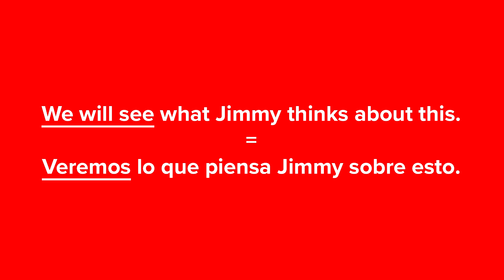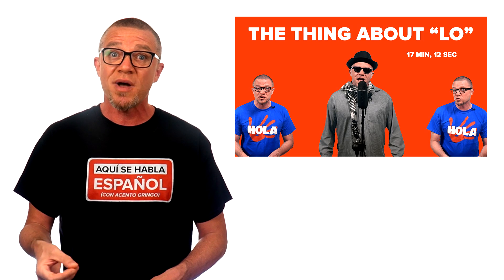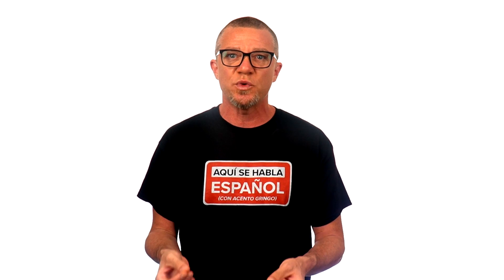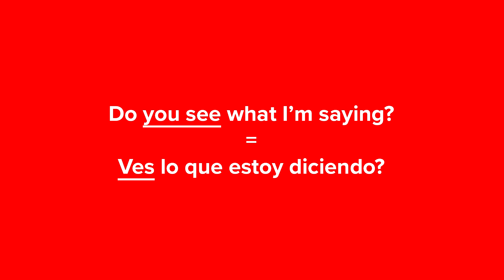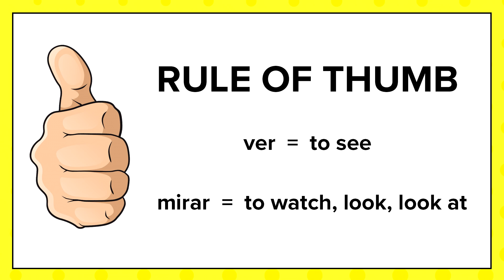Another context: 'We will see what Jimmy thinks about this.' This sentence is talking about seeing as in seeing a future outcome. Again, they say ver when we say 'to see.' One more simple context with ver: 'Do you see what I'm saying?' — ¿Ves lo que estoy diciendo? This sentence is talking about 'see' as in 'understand' — it basically means, 'Do you understand what I'm saying?' And yet again, they say ver when we say 'to see.' Ver usually means 'to see,' and 'to see' is usually translated as ver, even though ver can be used in many different contexts, just as 'to see' can be used in many different contexts.